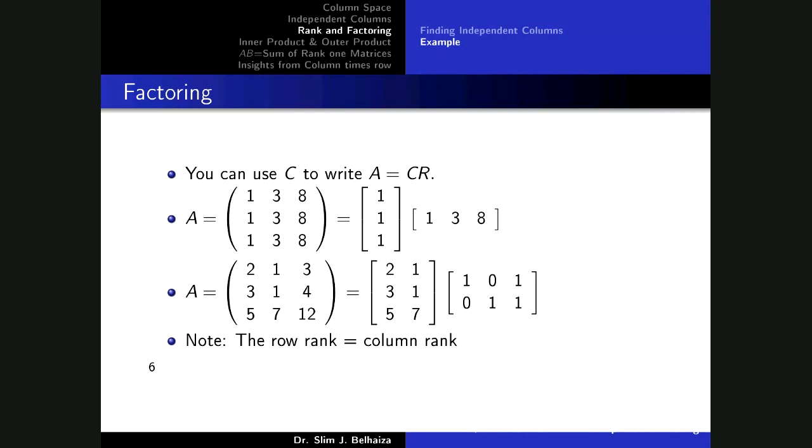The whole purpose of doing this is to obtain what we call a first factorization, where we can write A as equal to C times R. For the matrix with three dependent columns, you can see that if you take just the first column 1, 1, 1 and multiply it by 1, 3, 8, you can obtain back A. For the first matrix with two independent columns, you take the two independent columns and multiply by this matrix. The one, zero for the first column allows you to take only the information carried by column one, the zero, one allows column two, and one, one sums up the first columns.